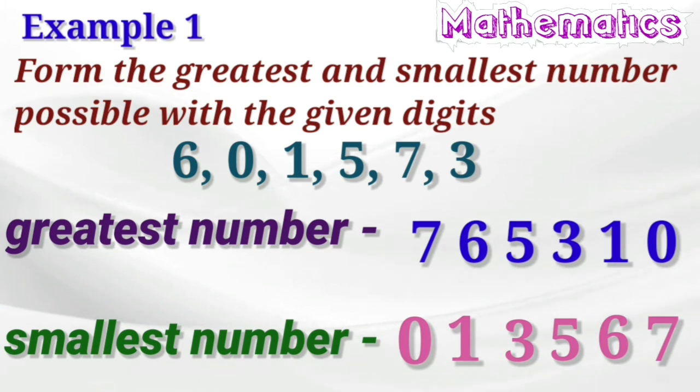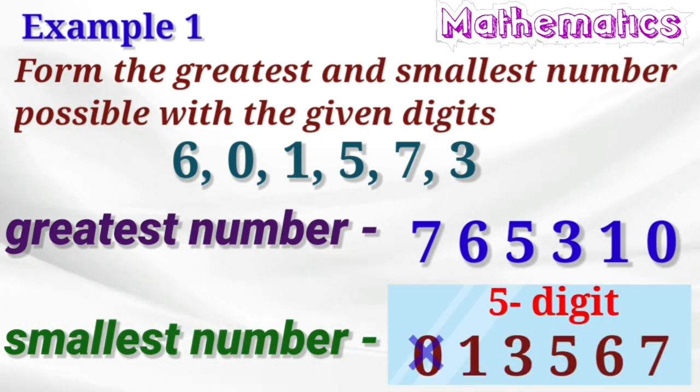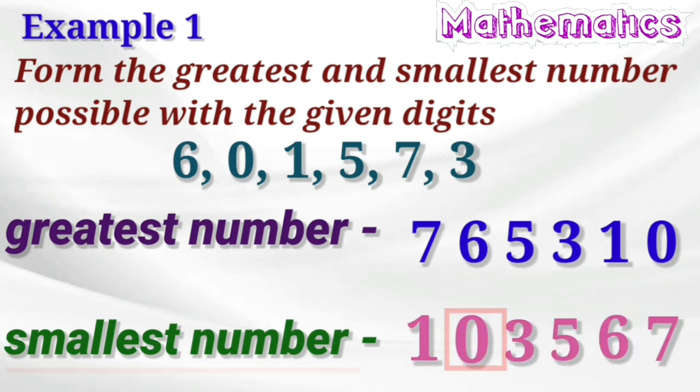Because, yehaan hume 0 ko first place per nahi, balki 0 ko second place per likhna hai. Arr second place walay number ko first place per likhna hai. Agar aap 0 ko first place per likhogay, toh woh 5 digit ka number ben jayega. So, humeisha yad rakhye ki, aap jab smallest number likhte ho, toh 0 ko second place per likhna chahiye.